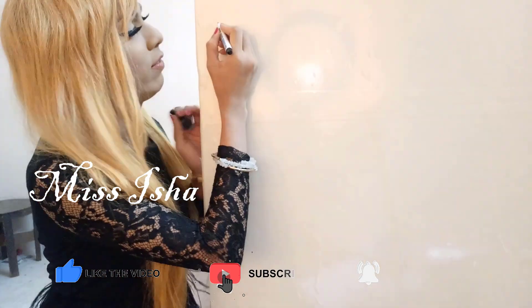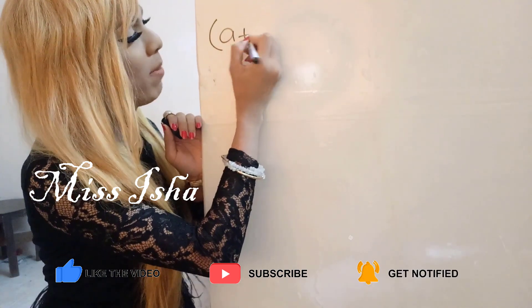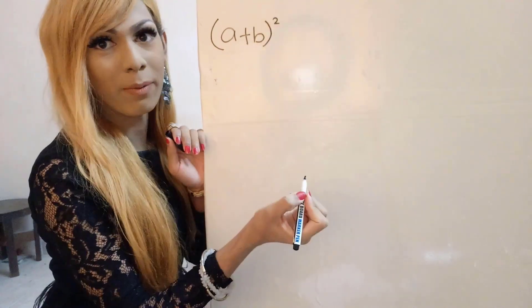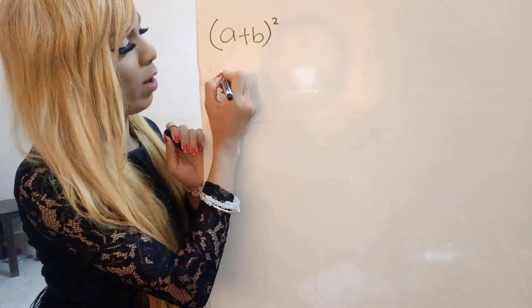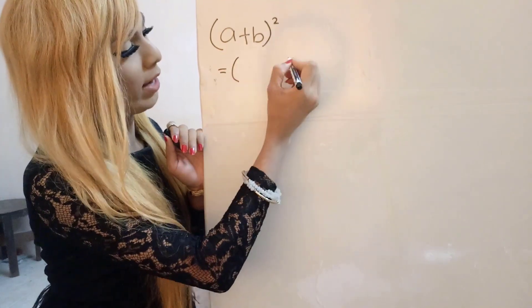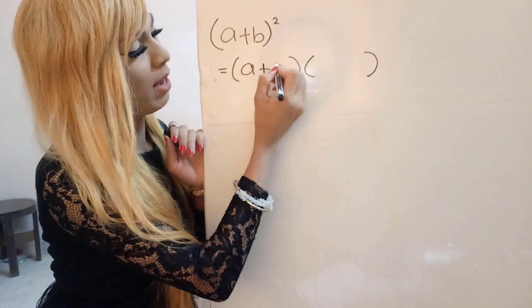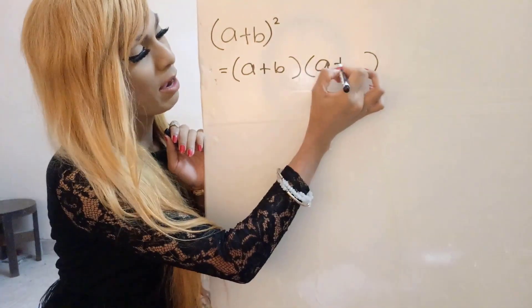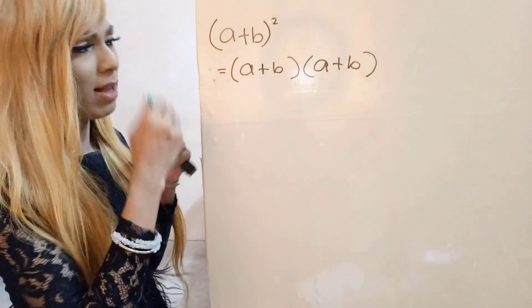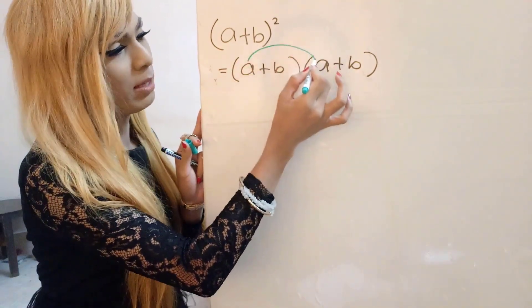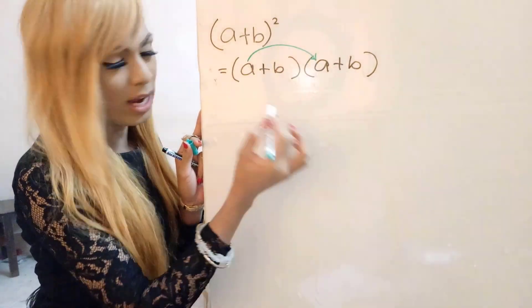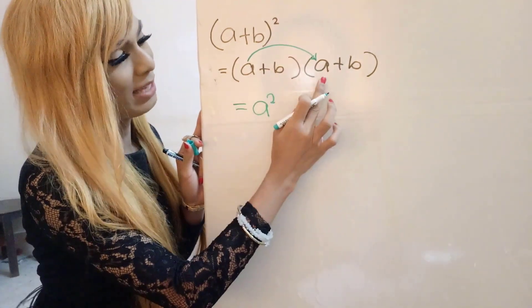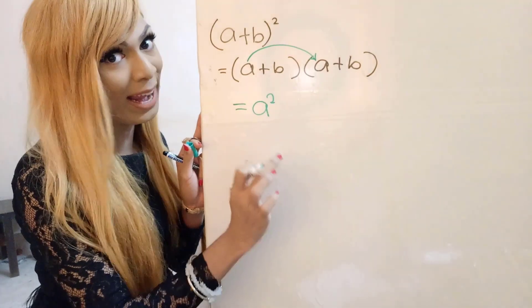Let's say we have (a + b) squared. When you want to expand this, we write it twice: (a + b) multiplied by (a + b). We're going to multiply through. So a times a gives us a squared.